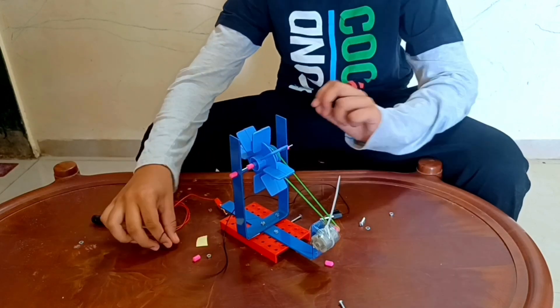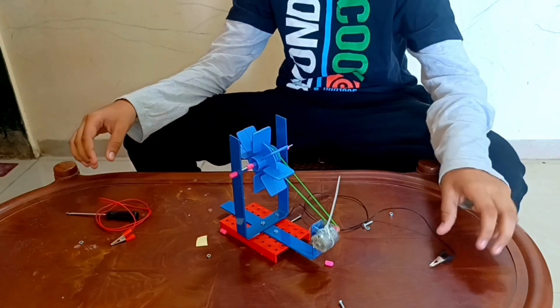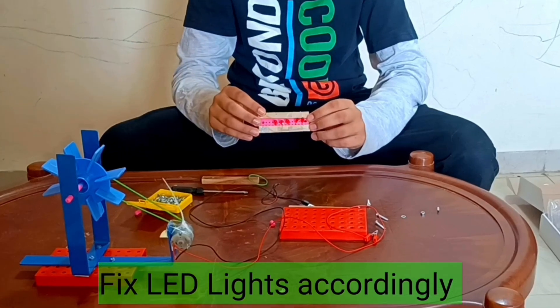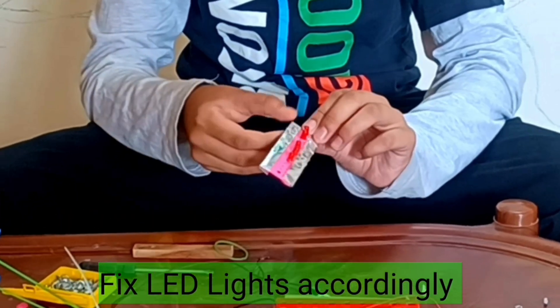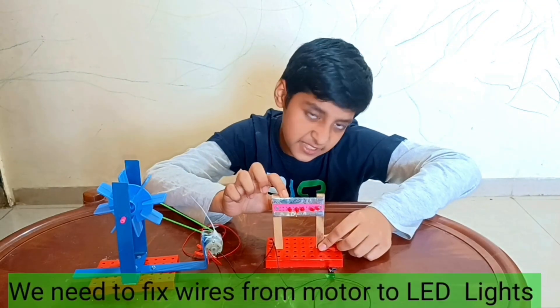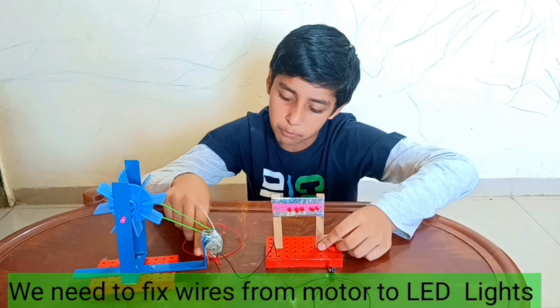Now let us connect the wire. Red output is positive and black output is negative. Let's fix it! Look at this LED light set. I have fixed it. This is positive, this is negative. Our connection is ready. Let's put the wire.